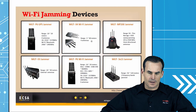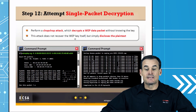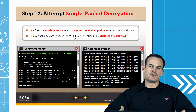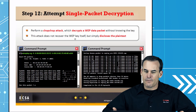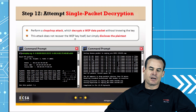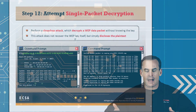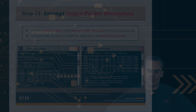Wi-Fi jamming devices — this slide should look familiar, similar to what was covered in CEH. Single-packet decryption: the chop-chop attack is listed as one of the attacks. In a chop-chop attack, you're actually decrypting WEP data packets without cracking the key itself, which makes it a somewhat unique technique.